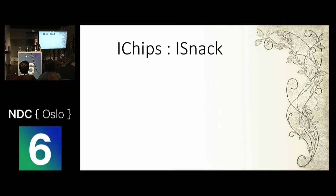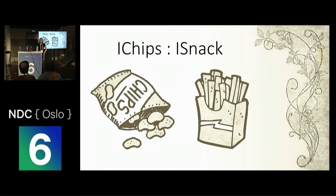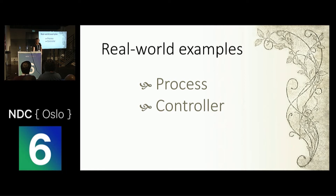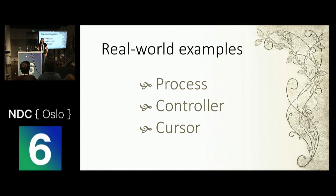What a chip means to me maybe isn't the same thing it means to you. And obviously this is a contrived example, but we run into this time and time again with overloaded programming terms. For example, a process — are we talking about a series of operations, or an instance of a program running on an operating system? A controller — are we talking about a general orchestration component, or a class in .NET Web API for handling HTTP requests? A cursor — even in the context of a long-running search, are we talking about an indicator for the user, or an identifier into a set of search results?